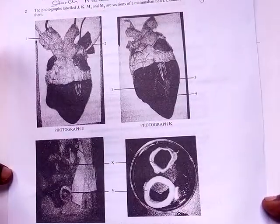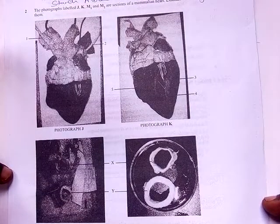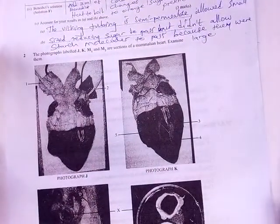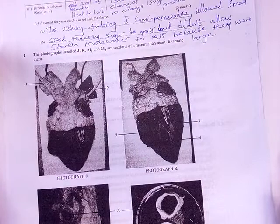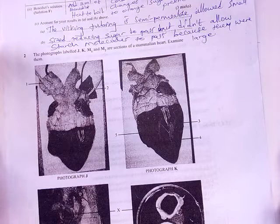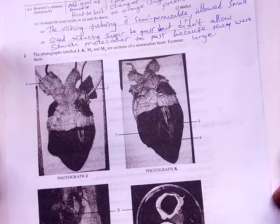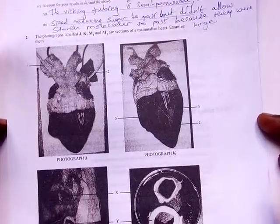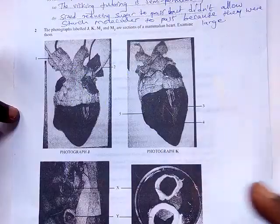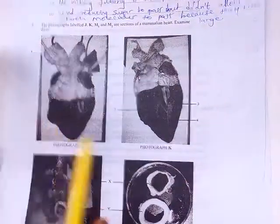For our photograph, the blue one was from the right ventricle, while the green one was the left ventricle. The cream one was the right auricle and cream two was the left auricle. Students should be able to know which is the right, which is the left, which is the ventricle and which is the auricle.